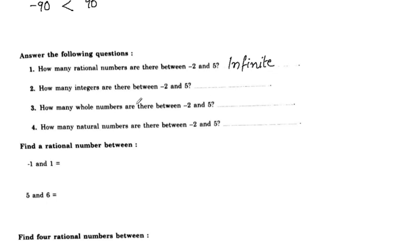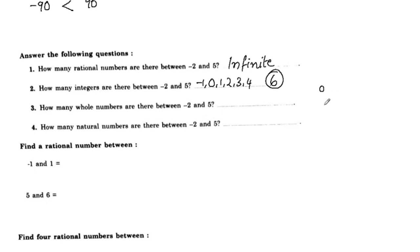How many integers are there between negative 2 and 5? Negative 2 and 5 - the integers between them are negative 1, 0, 1, 2, 3, 4. Total 6 integers between negative 2 and 5.